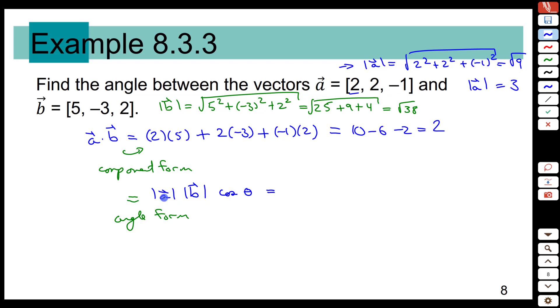Putting those all together, the length of a is 3. The length of b is the square root of 38. So we're going to set that equal to times the cos of theta. And we're going to set that equal to the dot product we calculated earlier. All of that equals 2. And now what we can do is solve for theta.